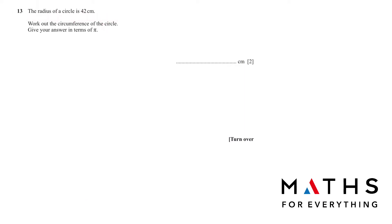Question 13: the radius of a circle is 42 centimetres. Work out the circumference of the circle, giving your answer in terms of pi. To find the circumference we use the formula 2πr. Replace r with 42: 2 multiplied by 42 gives 84, so the answer is 84π.